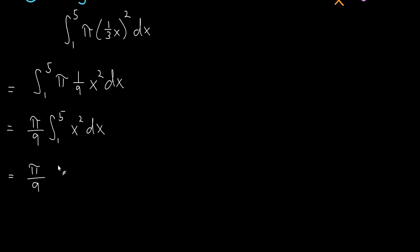And now we can take the antiderivative using the antiderivative power rule. So we add one to the exponent, so that's x cubed, divide by the new exponent, and then we have to evaluate that between one and five.